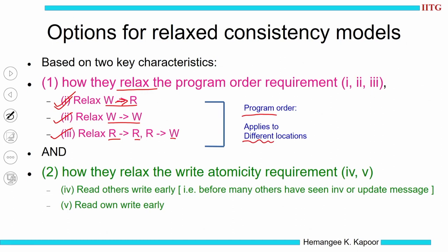The second relaxation is the write atomicity requirement. Here, when I say write atomicity, we had a write A followed by a read A in the same process. Can I do this read A because I have done the same write? This is called reading your own write. Sequential consistency says no — until this effect is seen by everybody, you cannot do your read. The second condition is: I do a read of B which was modified by some other process. Can I do this read B?